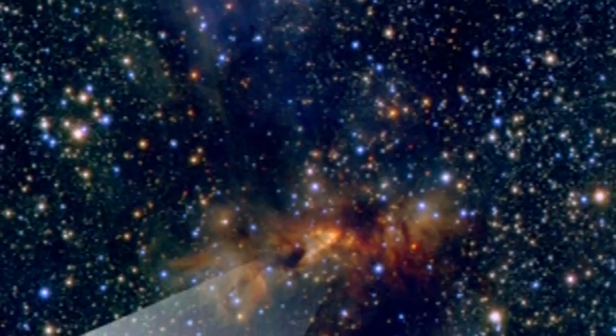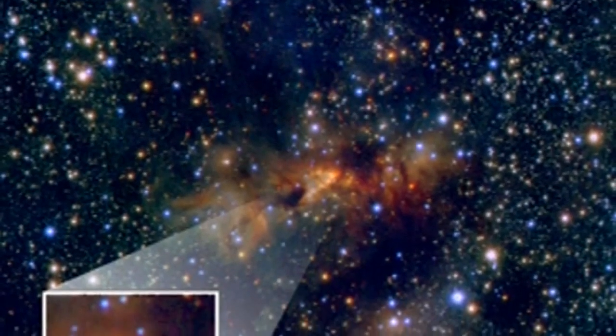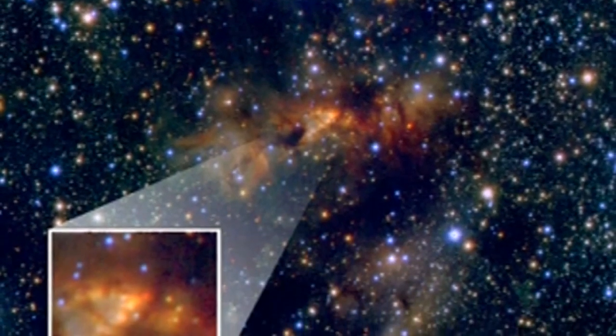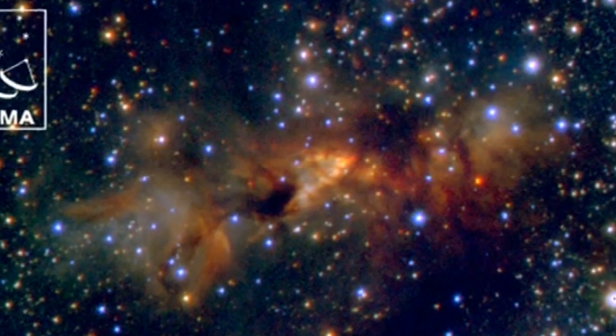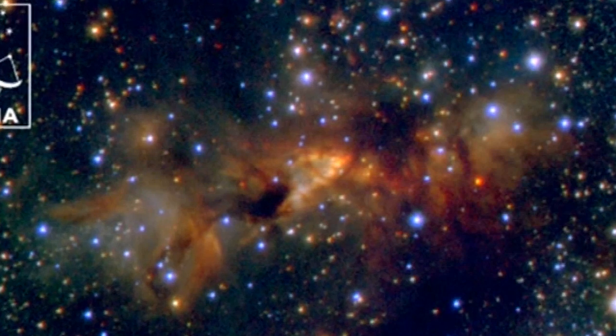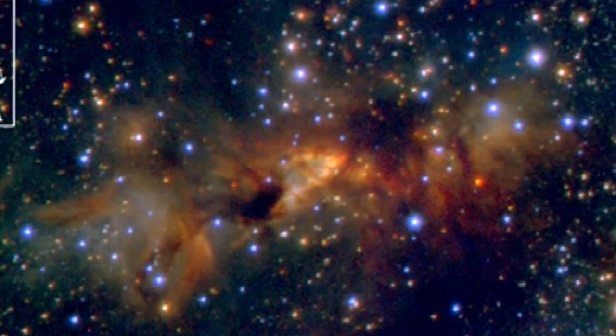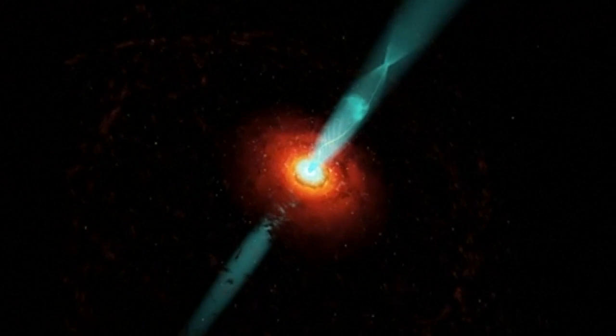A star forms from a collapsing gas cloud. The baby star being born attracts gas and dust because of gravity, gradually creating a spinning accretion disk from which planets can be formed. Some of that material is then fired off in supersonic jets of gas.